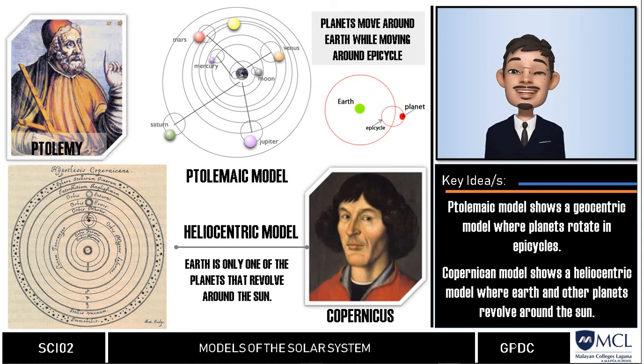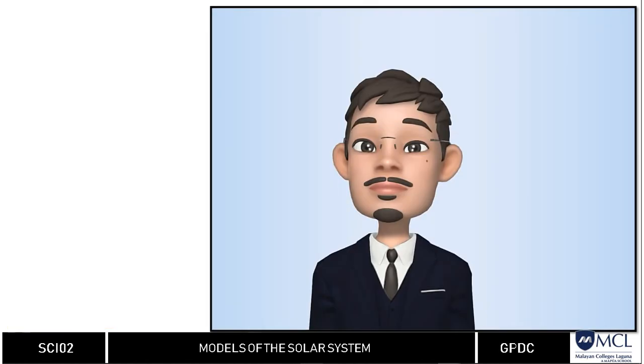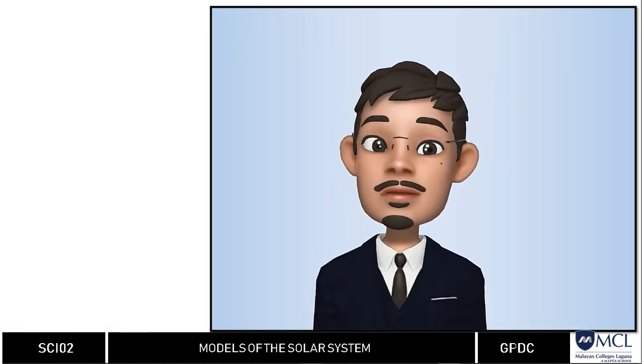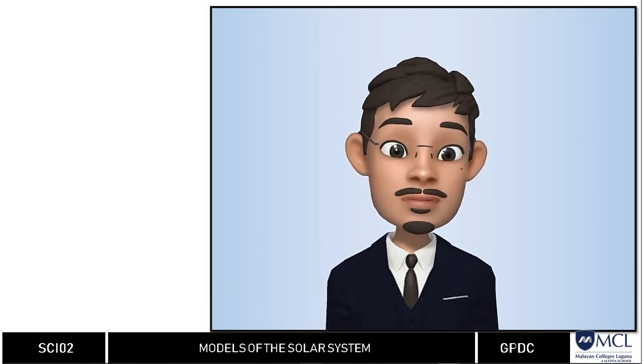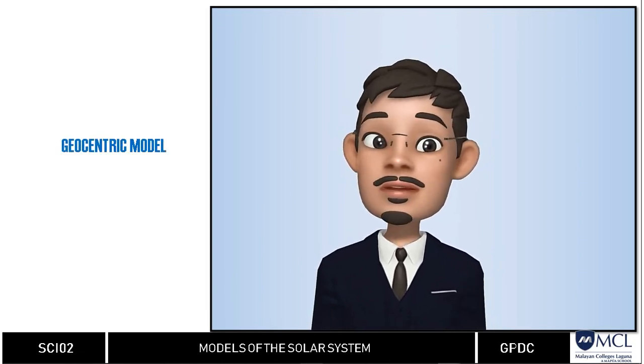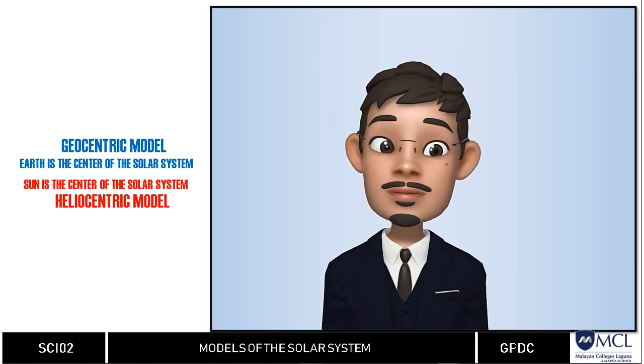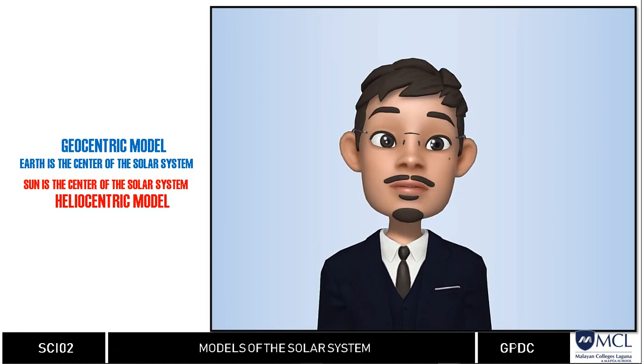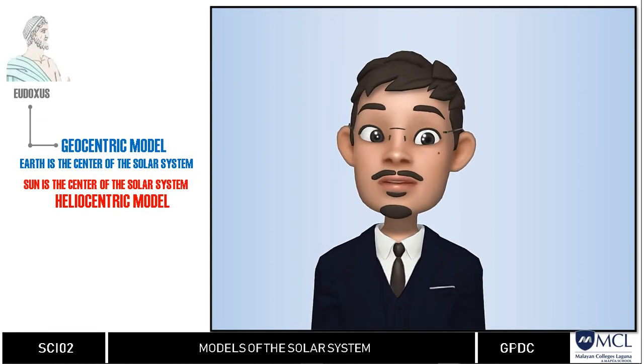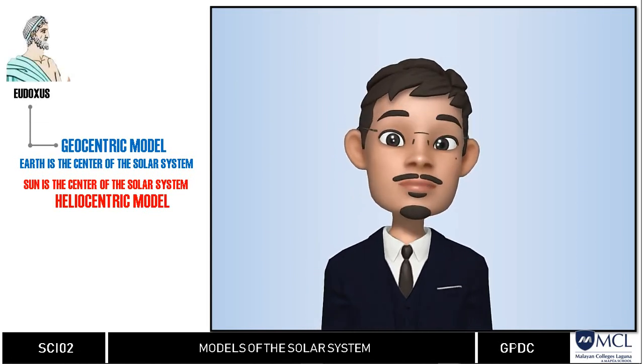To sum this up, let us again examine the models of the universe presented by our early astronomers. We have two general models: geocentric and heliocentric models. The notable names that supported geocentric models were Eudoxus who said that the sun revolved around the earth once every 24 hours while other stars were attached to a larger sphere.